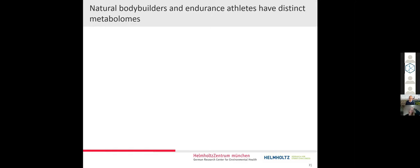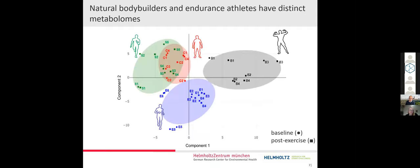In the second step, we looked at the global metabolite differences of our four recruited groups and we found that natural bodybuilders and endurance athletes have distinct metabolomes in this PLSDA analysis. Interestingly, the metabolomes of sprinters and untrained controls were overlapping.